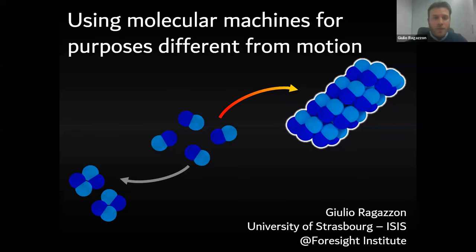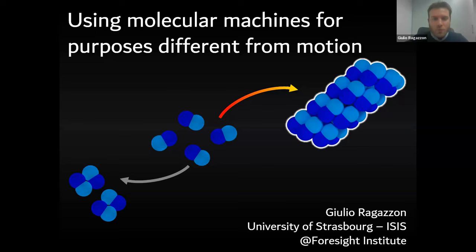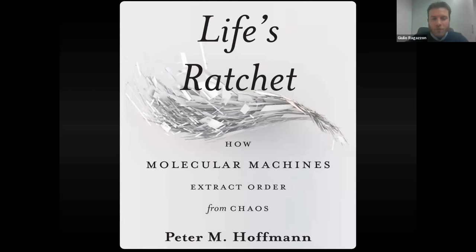Thank you very much. Thanks to the Foresight Institute for the opportunity to share what has been happening in the last few years, and thanks to those attending. We'll discuss how it's possible to use molecular machines for purposes different from motion. This talk revolves around one concept: molecular ratchets. To use the words of Peter Hoffman, a physicist — life ratchets — these mechanisms are how molecular machines extract order from chaos.